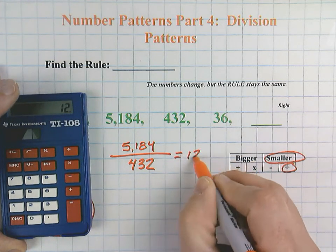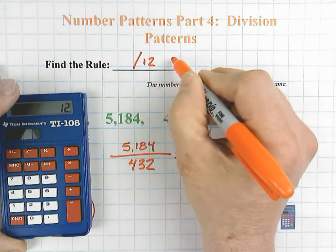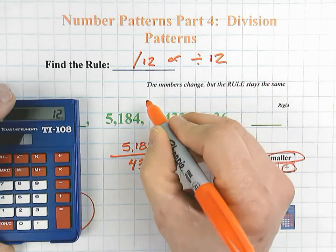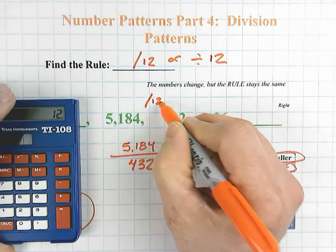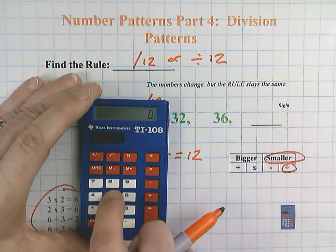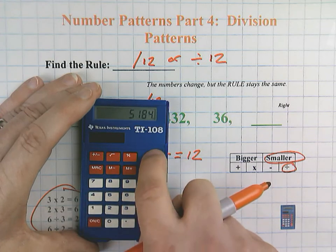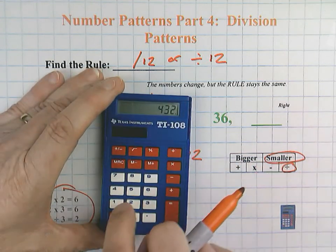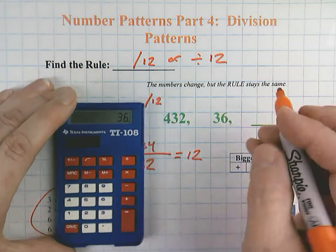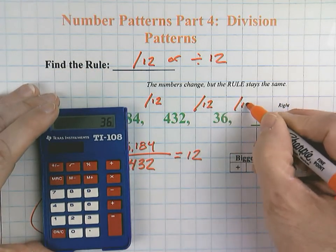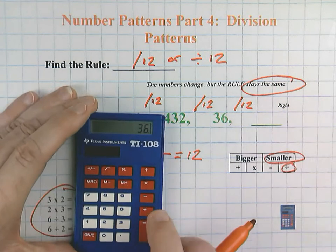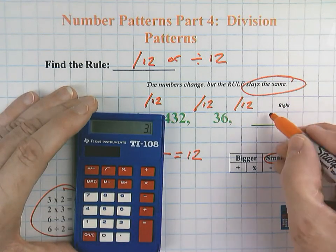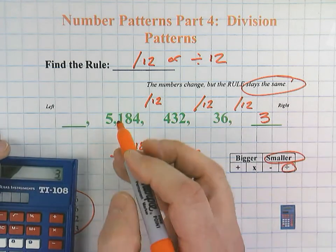So this is going to be a divide by 12, or you could express it as divide by 12. So let's just prove it. 5,184 divided by 12 equals 432 divided by 12 equals our 36. And the rule stays the same. 36 divided by 12 equals 3. And we've got this one here.